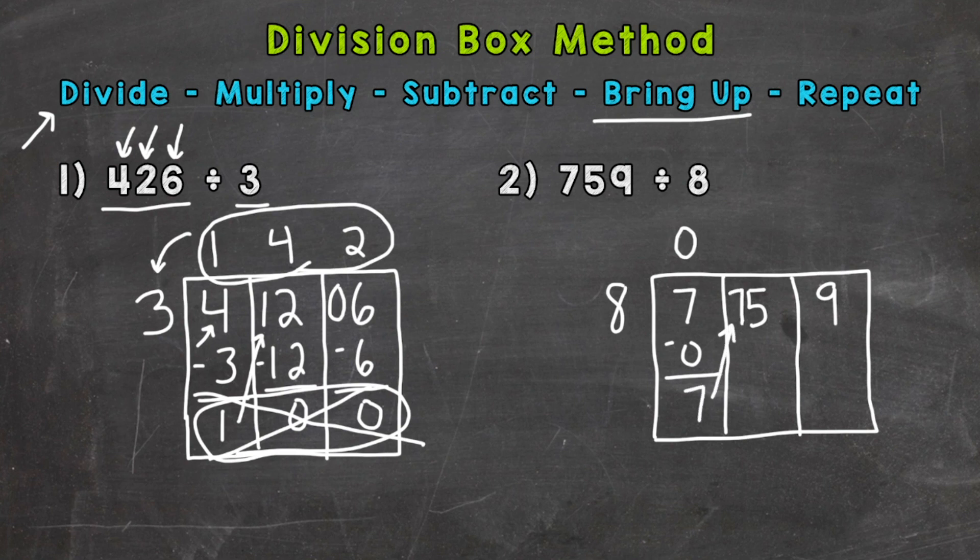And we have 75. So 75 divided by 8. Well we can pull 9 whole 8's out of 75. That gets us to 72. So let's put a 9 here. 9 times 8. 72. Subtract. 75 minus 72 is 3.